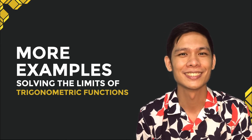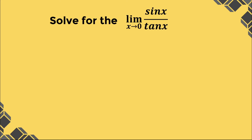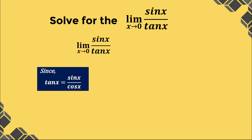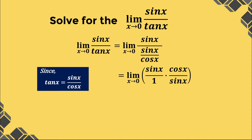For our last set of examples, let's solve for the limits of trigonometric functions. Let's solve for the limit of sin x over tangent x as x approaches 0. Since tangent x is equal to sin x over cosine x, we can rewrite the given as sin x divided by sin x over cosine x. Simplifying further, we multiply sin x by the reciprocal of sin x over cosine x, which is cosine x over sin x, and then cancel out sin x. Therefore, we have the limit of cosine x as x approaches 0, which is equal to 1.